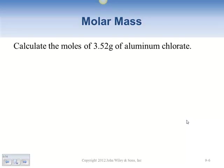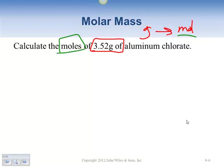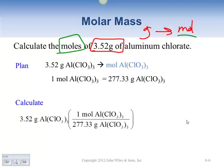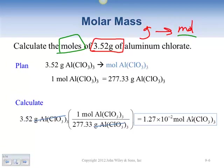Now we're going to calculate the number of moles from the number of grams — our plan is grams to moles. We're given a certain amount of grams and we'll calculate the moles from that. We have the grams to start, divide by the grams per mole, so we're converting from grams to moles. That gives us 1.27 times 10 to the minus 2 moles — a very small amount from just 3 grams.